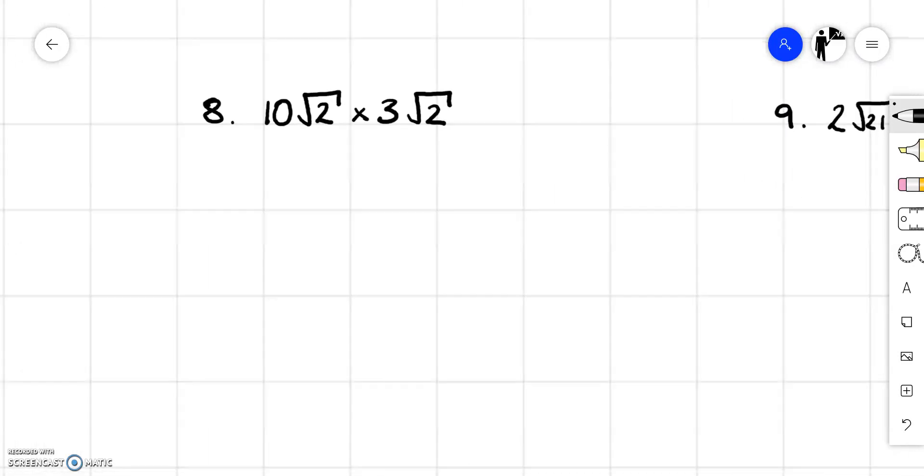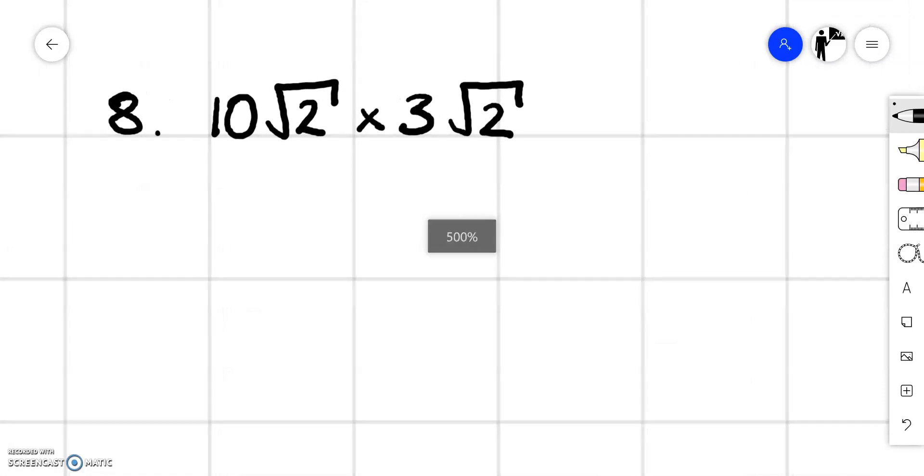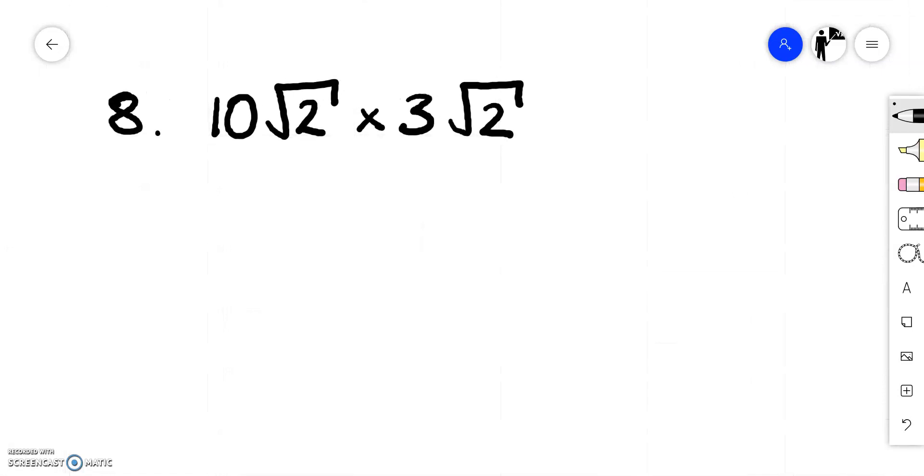Example 8. 10 root 2 times 3 root 2. Well 10 times 3 is 30 and we've got root 2 multiplied by root 2.